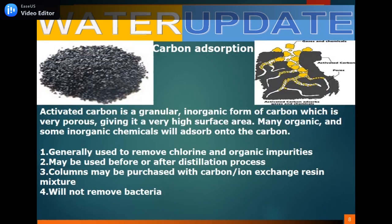The next method is carbon adsorption. Activated carbon is a granular, inorganic form of carbon which is very porous, giving it a very high surface area. Many organic and some inorganic chemicals will adsorb onto the carbon. It is generally used to remove chlorine and organic impurities, and may be used before or after the distillation process. Carbon may also be purchased as a mixture with ion exchange resin. It will not remove bacteria.